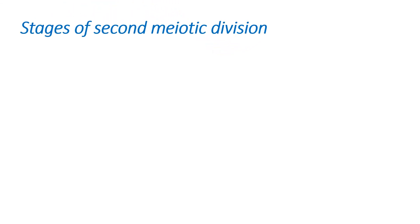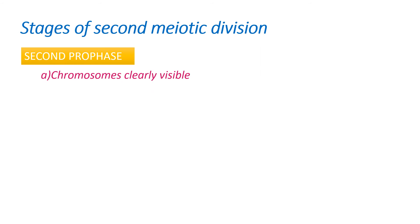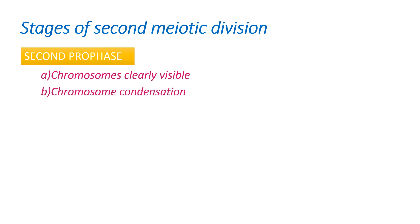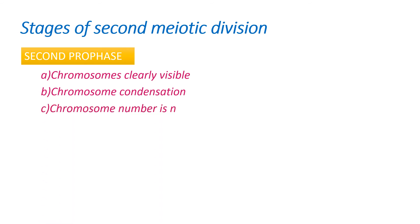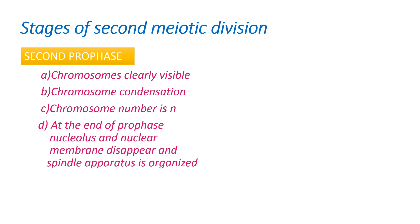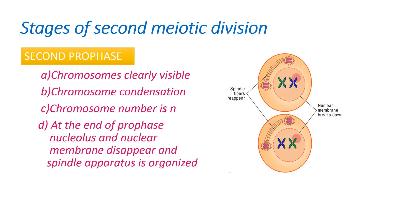The stages of the second meiotic division: the first stage is prophase II. During prophase II, the chromosomes are clearly visible, and there is chromosome condensation — the chromosome number is n. At the end of prophase II, the nucleolus and nuclear membrane disappear and the spindle apparatus is organized. Two cells formed by the end of meiosis I each undergo separate division.